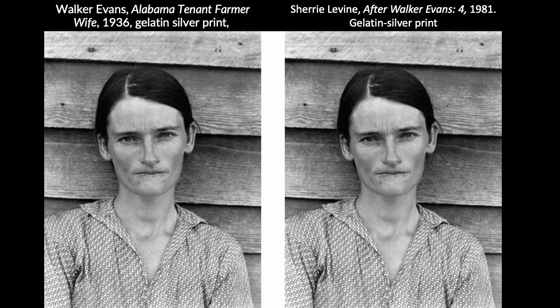Another artist who embraced appropriation during the postmodern era was Sherrie Levine, who questioned the nature of artistic originality and authority. Levine produced a provocative series of photographs that were actually reproductions of Depression-era photos taken by Walker Evans. Evans worked with the Farm Security Administration in the 1930s, and his images were used as evidence of poverty in the South. Levine directly appropriates Evans' work, claiming the legacy of the well-known male artist for herself.